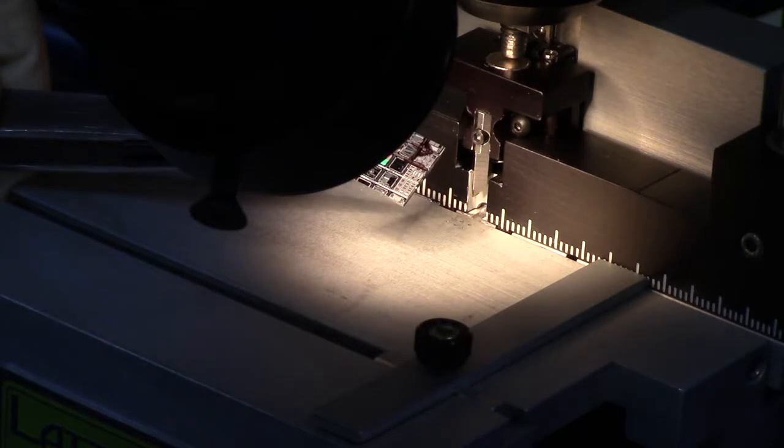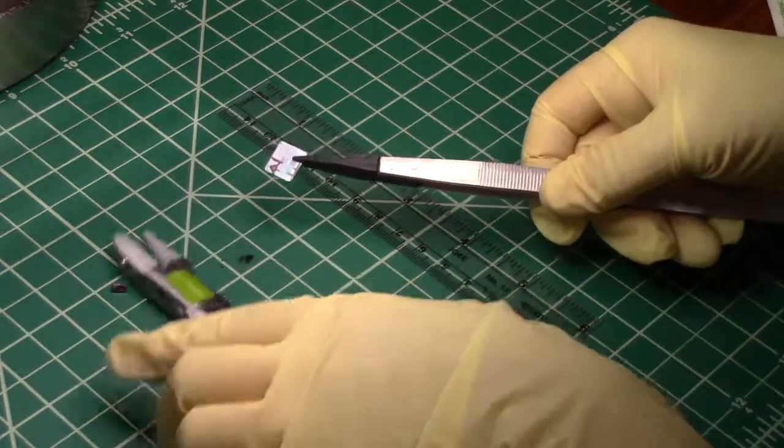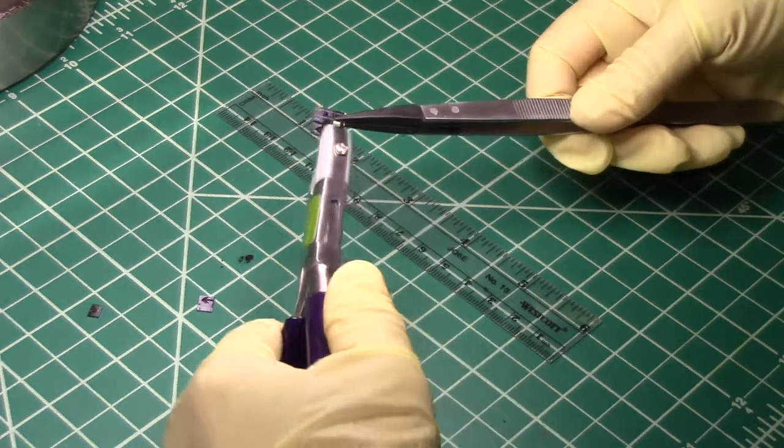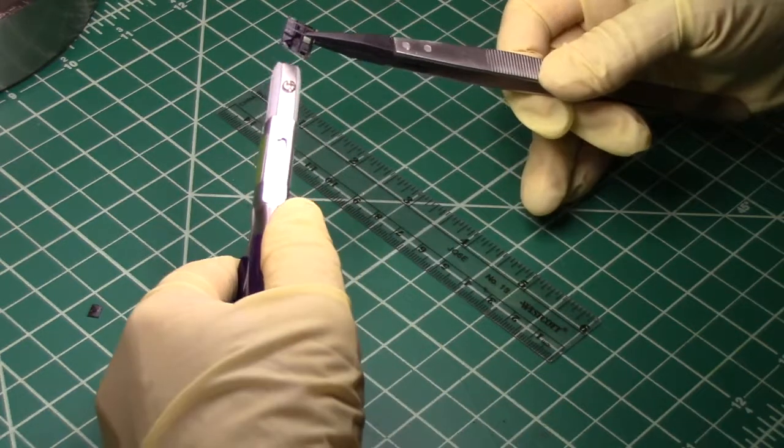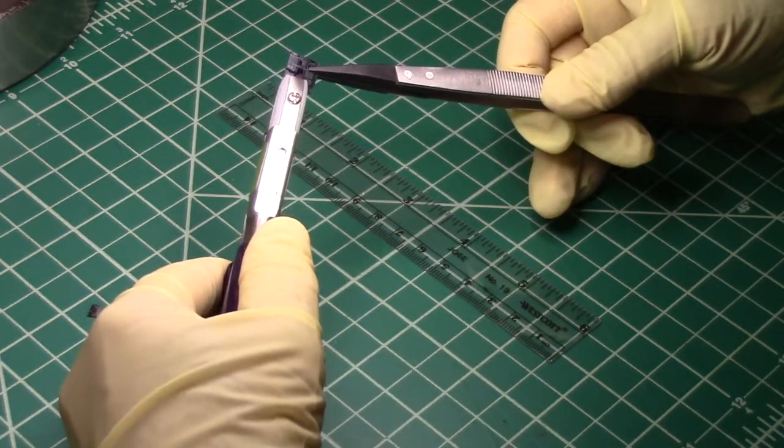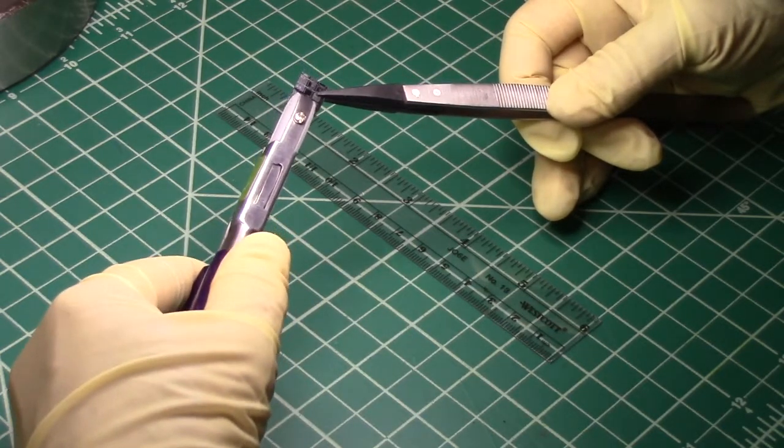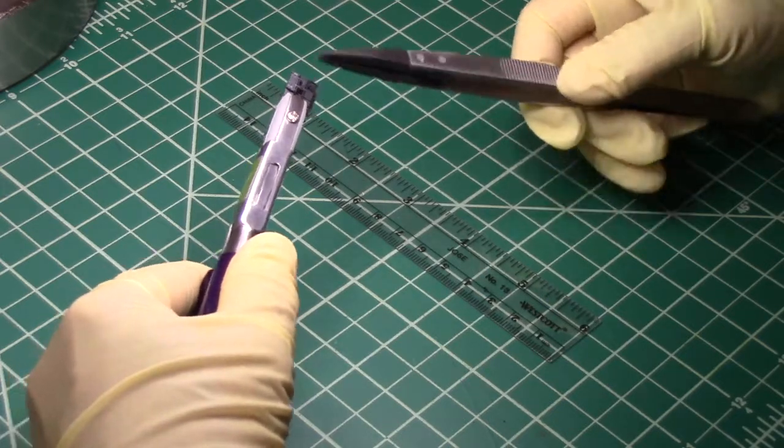And there you see the sample. In the next step, I'll use the small sample cleaving pliers to cleave the sample. I know where I have made my indent, so I'll just grab that edge with the indent.